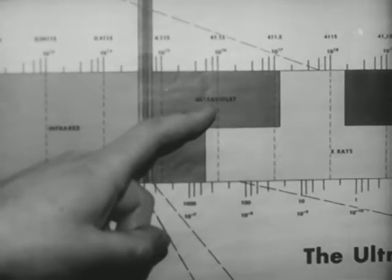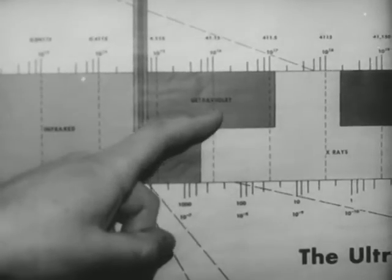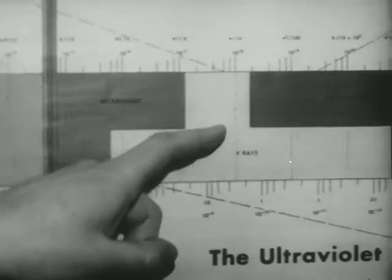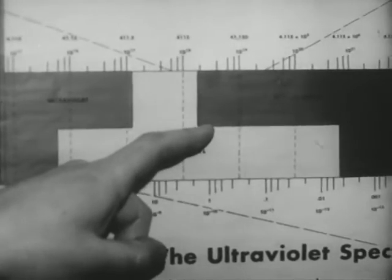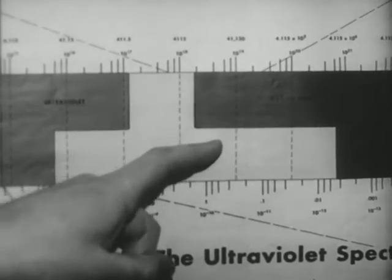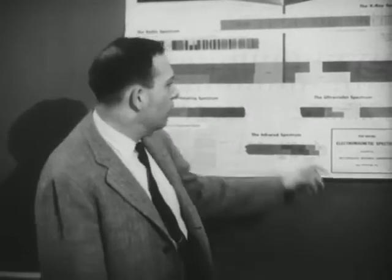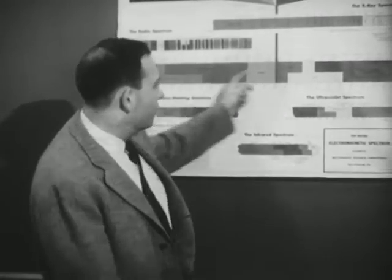Ultraviolet, about 5 times 10 to the minus 8 meters. X-rays, 10 to the minus 10 meters. You have just seen the enormous range in frequency and wavelength over what we call the electromagnetic spectrum.